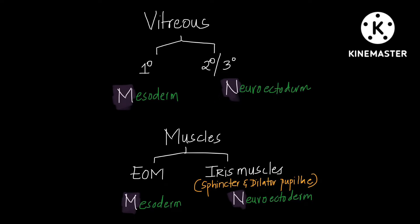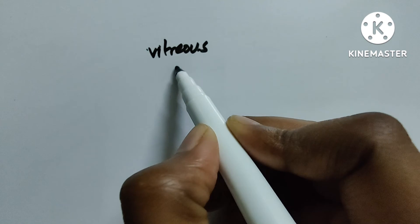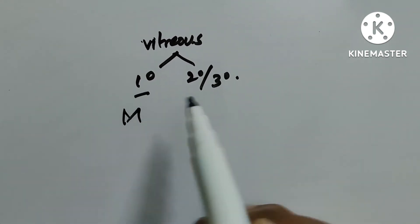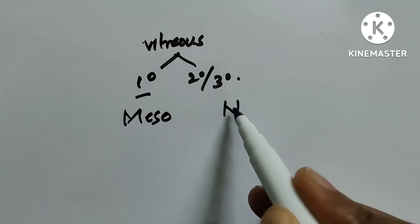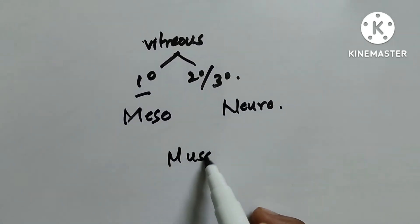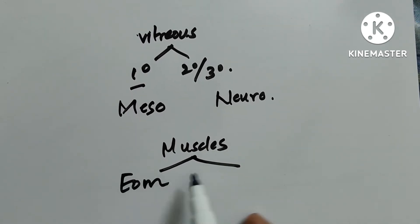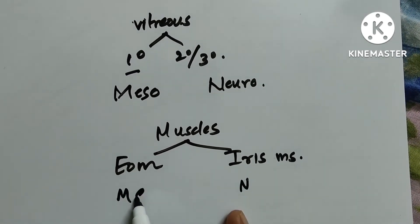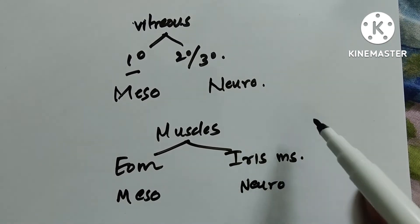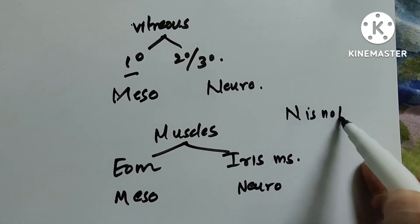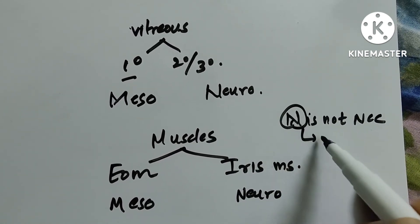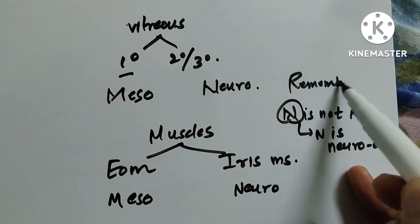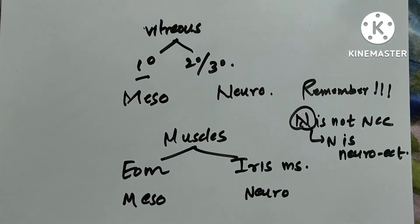Now a rapid fire session. Vitreous — primary and secondary/tertiary — from which layers? Primary is from M, secondary/tertiary from N. M is mesoderm and N is neuroectoderm, not neural crest. Then muscles: extraocular is from mesoderm, iris muscles are from neuroectoderm. N here is neuroectoderm because it rhymes with meso. This is repeated because in exams students confuse whether N is neural crest cell or neuroectoderm.